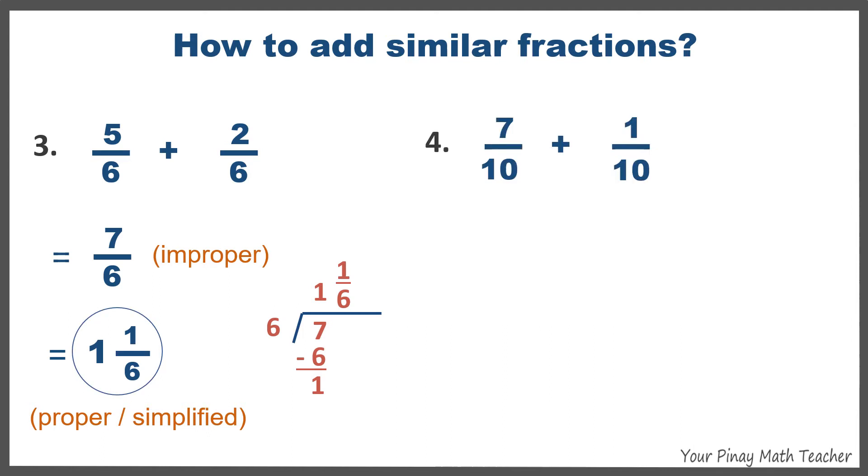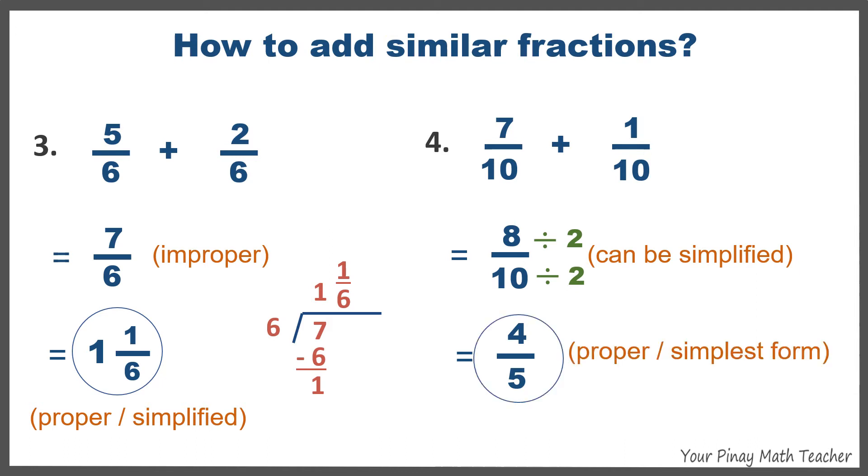Number four, 7 tenths plus 1 tenths is equal to 8 tenths. Since this is still to be simplified, we have to divide both by the same number, which is 2. The final answer is 4 fifths, since 4 fifths also is a proper fraction and it is in its simplest form.